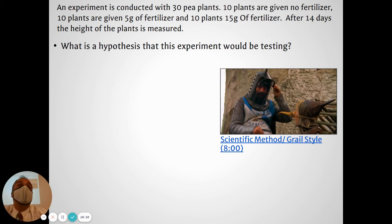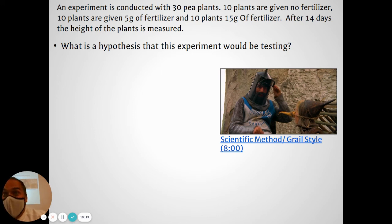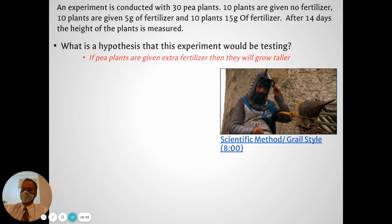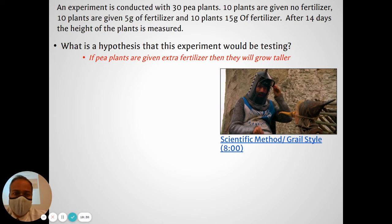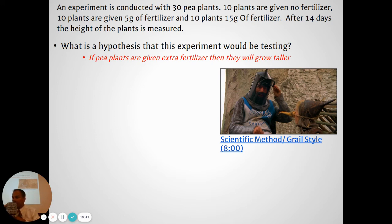With our hypothesis we have to make sure it's a statement: if I do this, then this will happen. If pea plants are given more fertilizer, then they will grow taller — that would be an appropriate hypothesis. She could have had a different hypothesis — she could have said it won't affect them, that would be okay. Or she could have said if given a medium amount they'll grow better — that would also be a fine hypothesis.